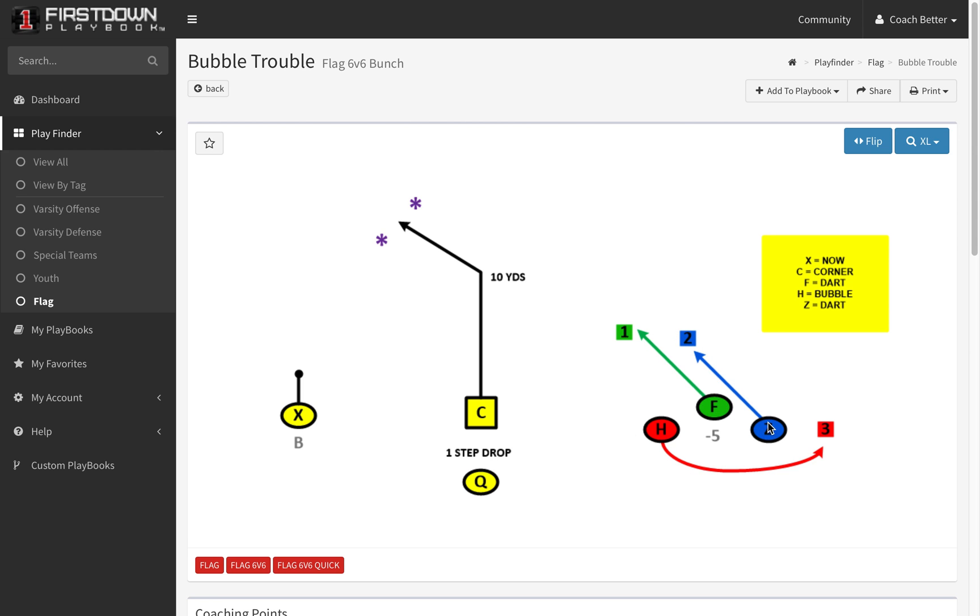If you get man, whoever's covering this H will probably be off. They may have somebody up on the point, but you still have a good shot of there being some type of rub or pick right here. And so if the quarterback sets his feet, F and Z run through and are covered, then you want to look for the swing right here to the H.